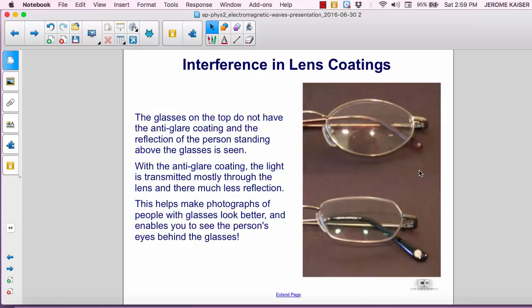In the picture on the right, you can see two pairs of glasses. The glasses on top do not have an anti-glare coating, and the reflection of the person standing above the glasses can be seen quite clearly. With the anti-glare coating, the light is transmitted mostly through the lens, and there's much less reflection. If you look at the glass below, one can barely see any reflection of the person above.